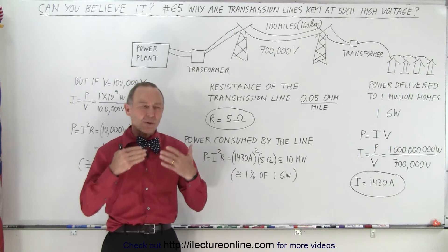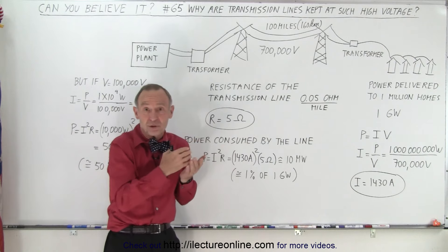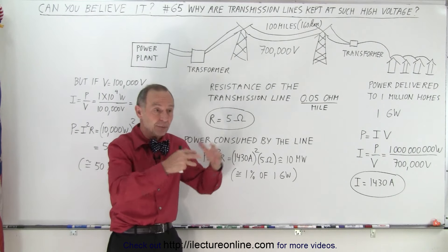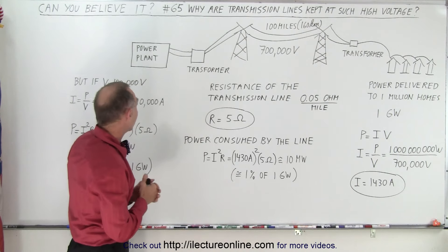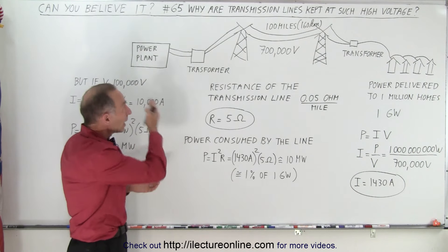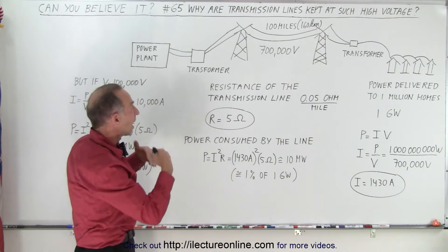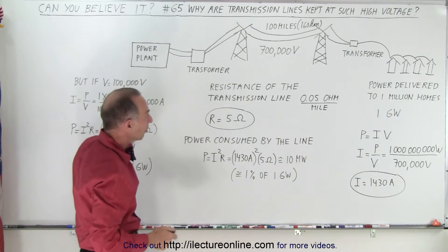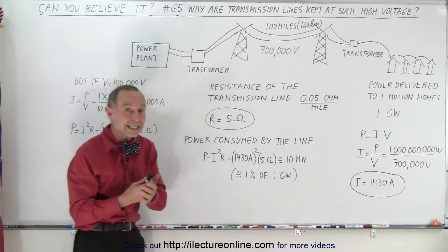The high voltage transmission lines that you find everywhere carry electricity, or essentially power and energy, from the power plant, the factory where they produce electricity, and we send it along hundreds and hundreds of miles of high voltage transmission lines to eventually make it down to the houses or the factories or the places where you need that electricity.